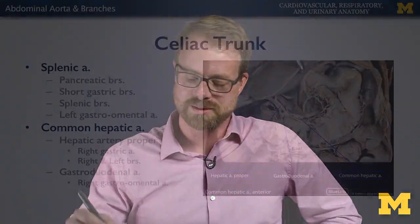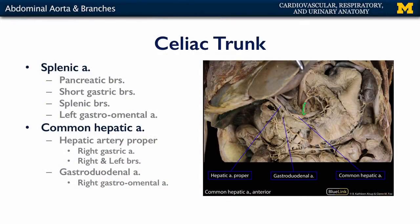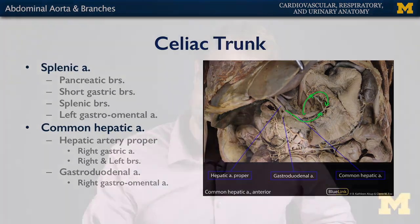The other branch of the celiac trunk is the left gastric, which supplies blood to the lesser curvature of the stomach. It also has help from the right gastric, which is a branch of the hepatic artery proper. So the lesser curvature of the stomach is supplied by the gastric branches, whereas the greater curvature of the stomach and greater omentum are supplied by the gastro-omental arteries.